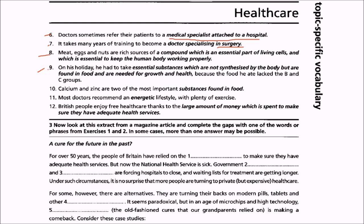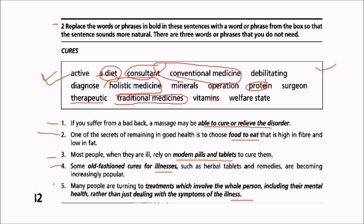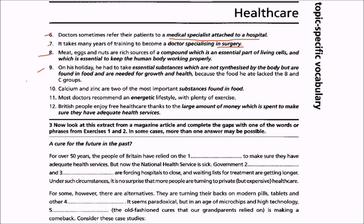Ninth: on his holiday he had to take essential substances which are not synthesized by the body but are found in food and are needed for growth and health, because the food he ate lacked the B and C groups. In this case we are talking about vitamins — B, C, and others are all examples of vitamins.